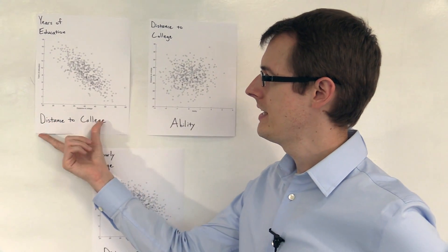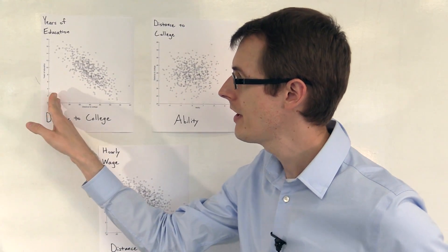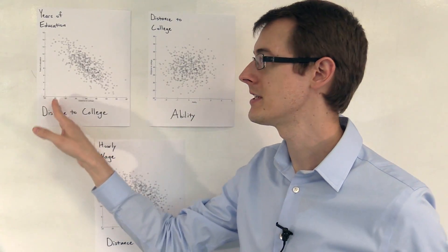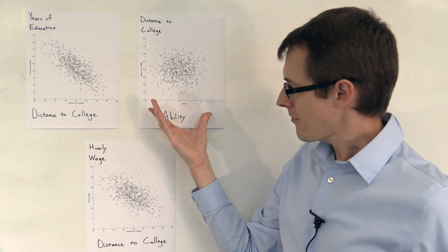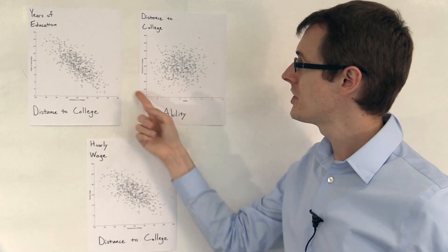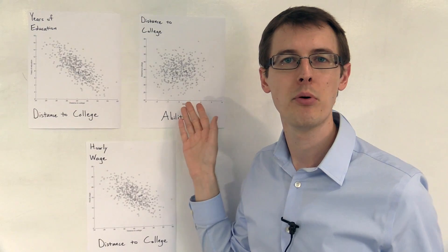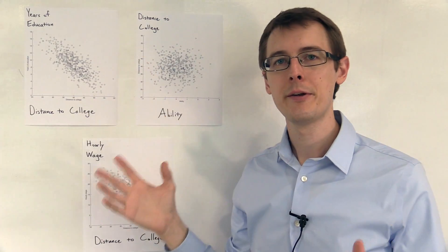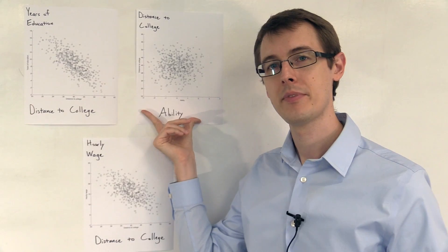So let's see what it looks like in the data. I've plotted distance to college versus years of education, and people who live closer to a college tend to get more education — that was our first assumption, that there is a causal effect of distance to college on years of education. The next plot shows ability versus distance to college, and there isn't any relationship — it's just a big cloud of points. That was our next assumption: that distance to college is unrelated to other possible confounders like ability.